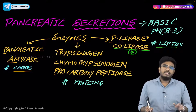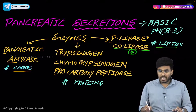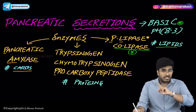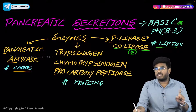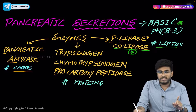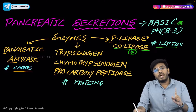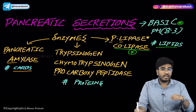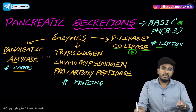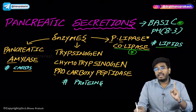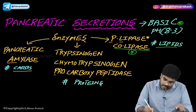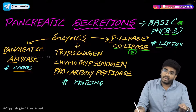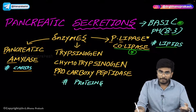One more important point: these pancreatic secretions are highly alkaline in nature. However, this is not the most alkaline secretion in the GI tract. The most alkaline secretion in the GI tract is Brunner gland secretions, which are produced inside the duodenum, with a pH of 8.9. Pancreatic secretions are also alkaline, having a pH of 8.3 — alkaline, but not the most alkaline.